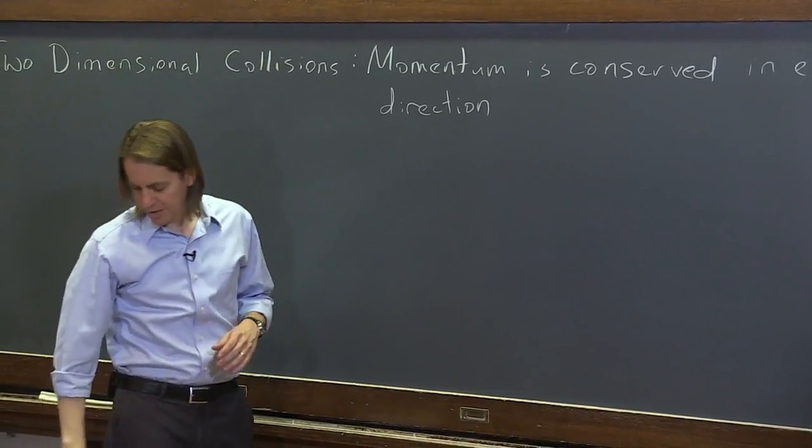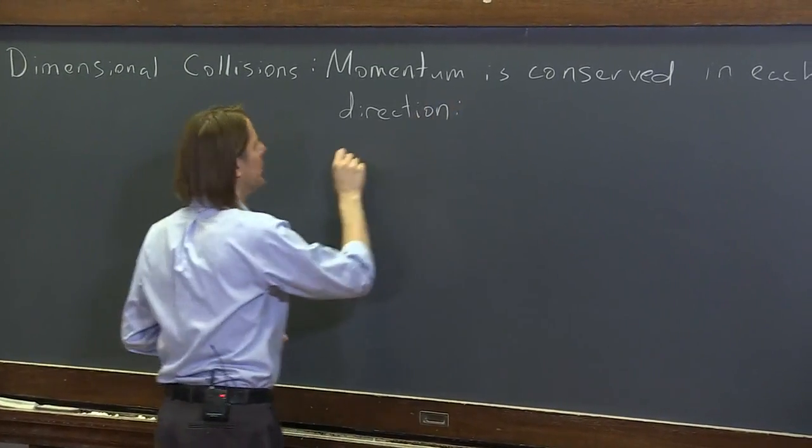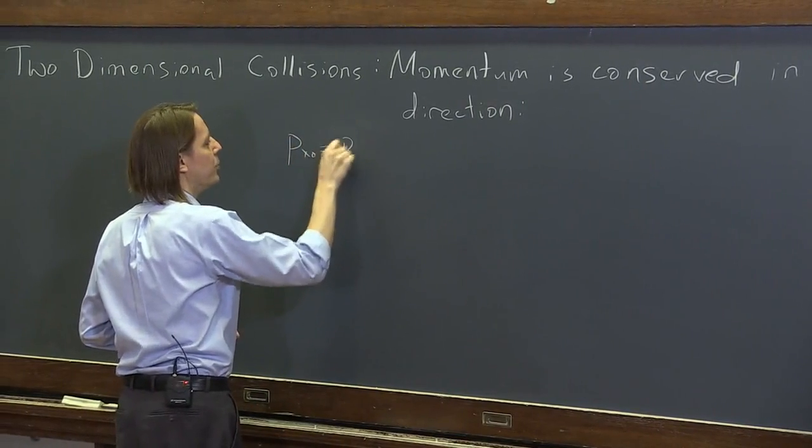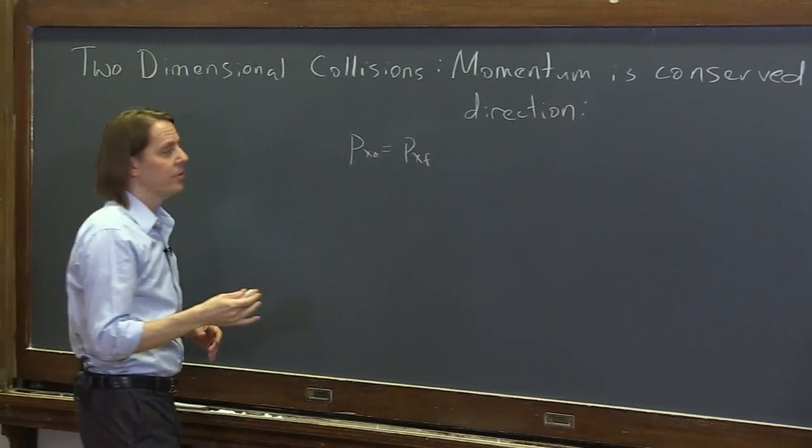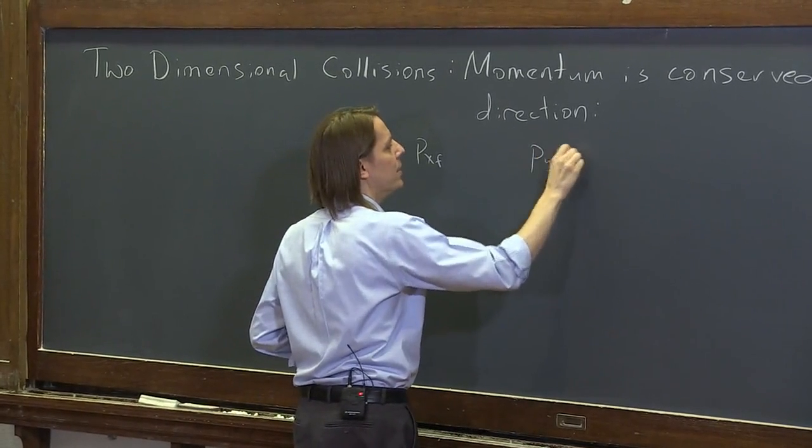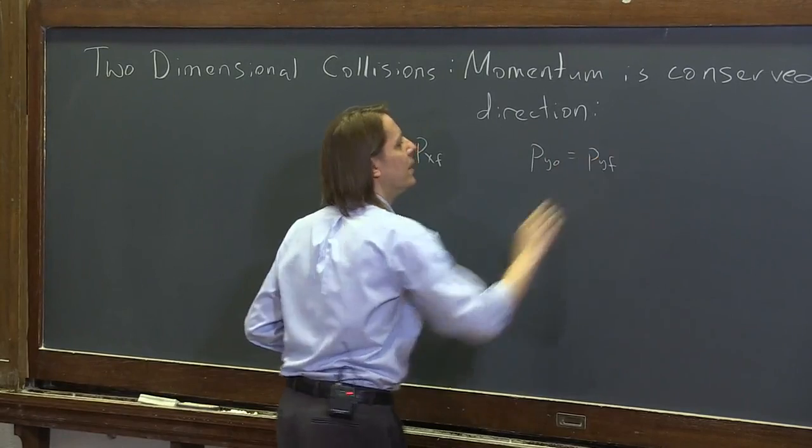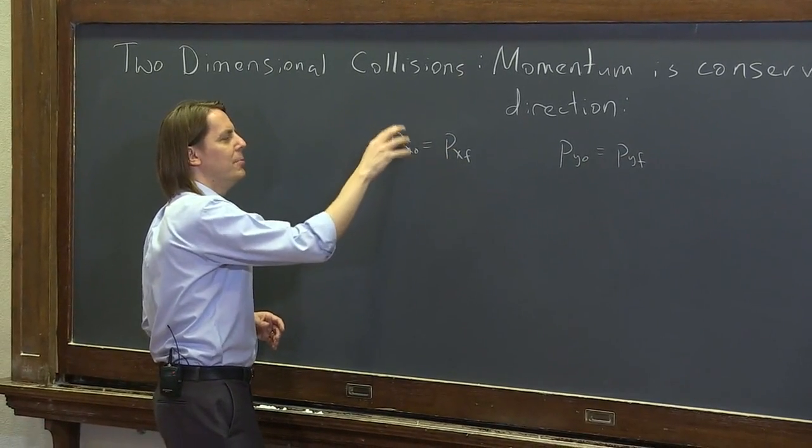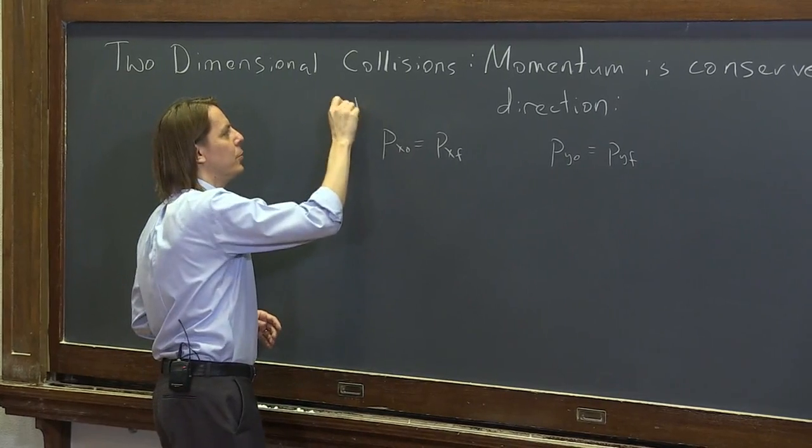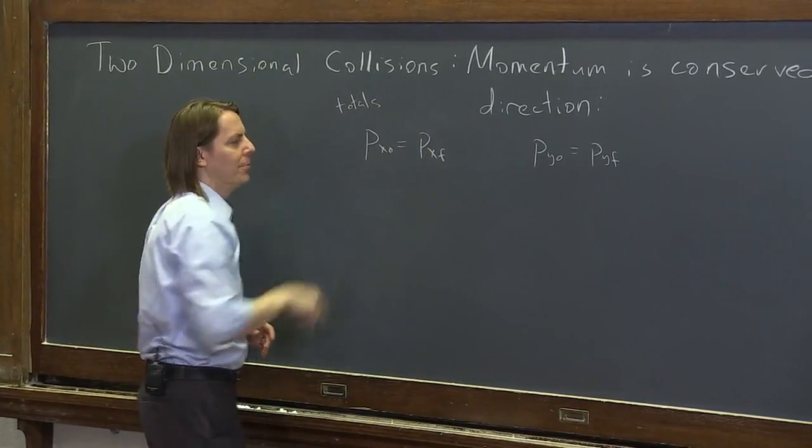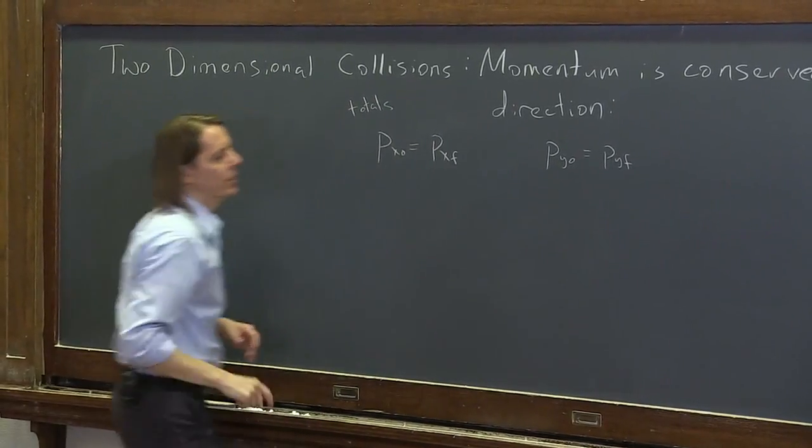So what that means is we could say that Px0 equals Pxf. So that's the x direction. And then we could say that Py0 equals Pyf. And these don't mean the momentum of an individual object. This means the total momentum. The total momentum along the x direction, the total momentum along the y direction.